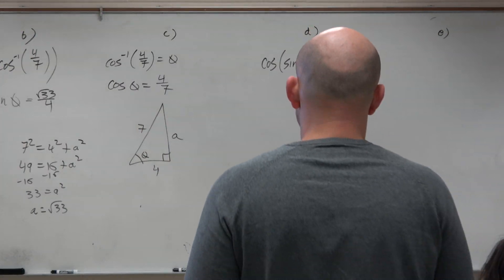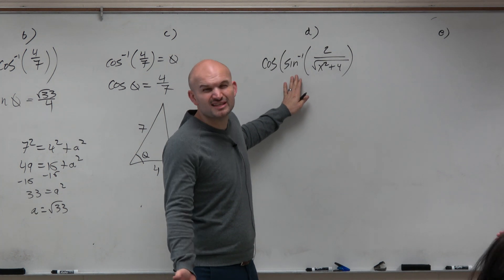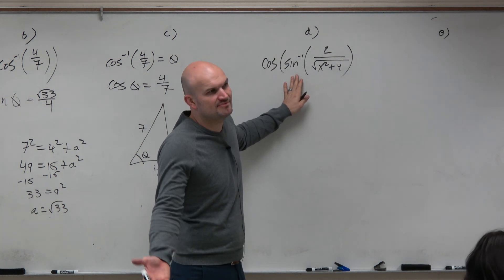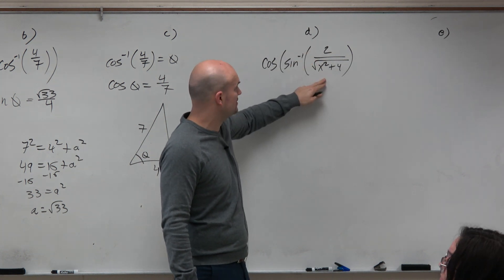In this case, sine is opposite over hypotenuse. Could I rewrite another expression saying sine of some angle? Let's call the angle something different this time. Let's call it alpha. Could I say sine of alpha is equal to 2 over square root of x squared plus 4?